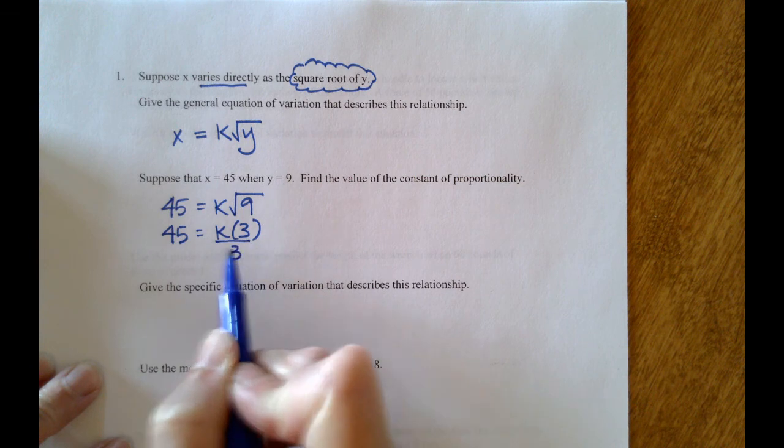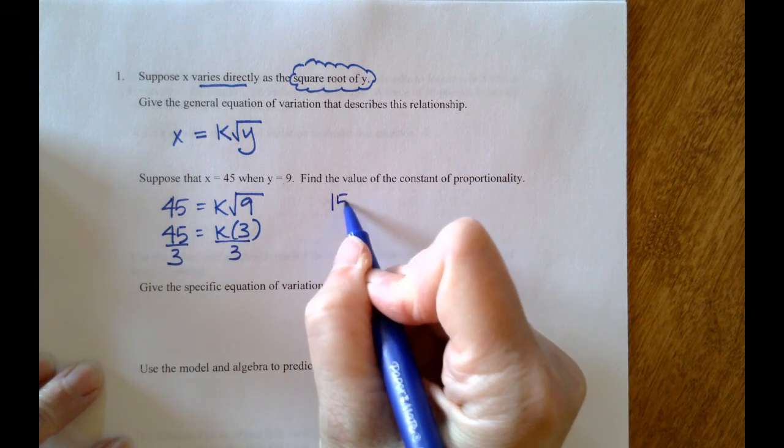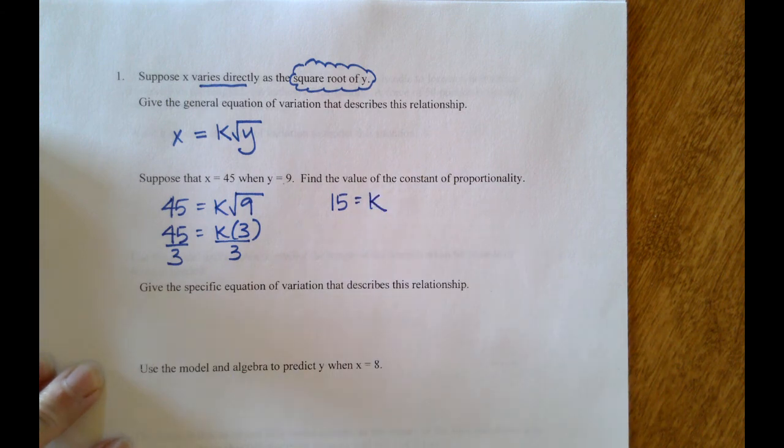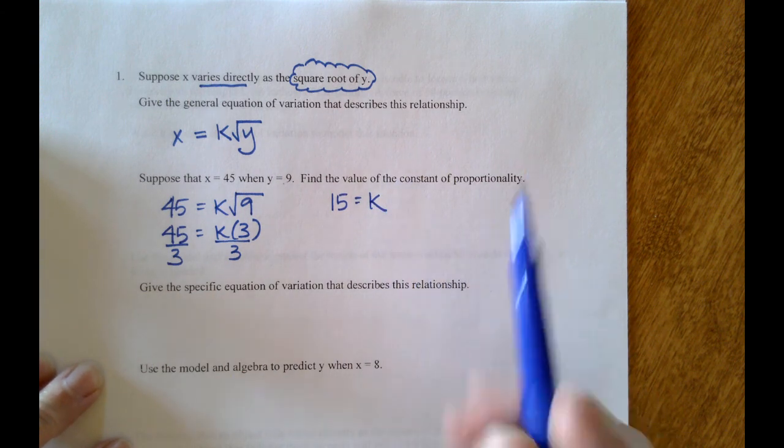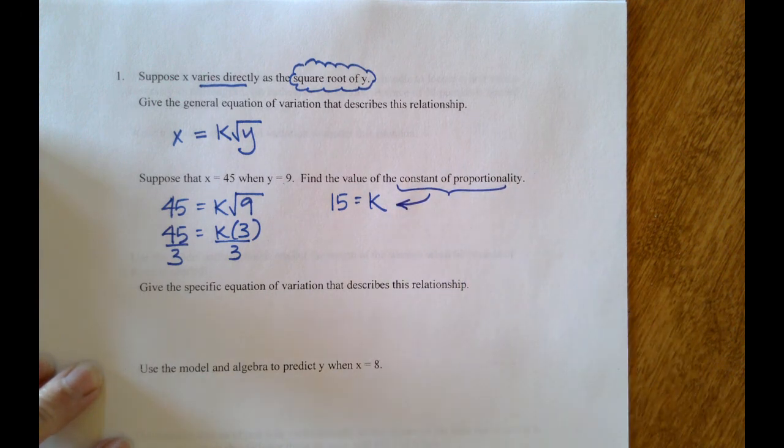45 equals k times 3. To solve for k, we will divide both sides of the equation by 3, and we find out that our k value is 15. So the constant of proportionality is this k value, 15.